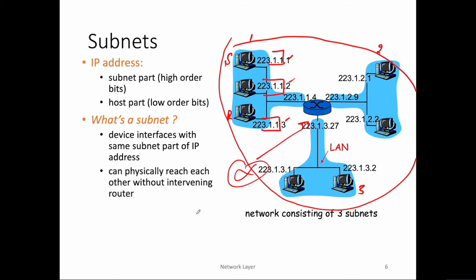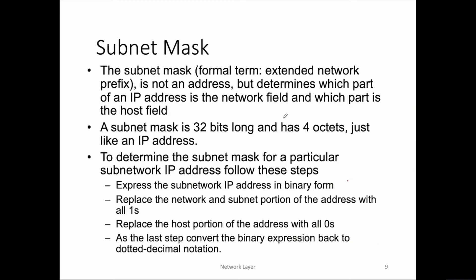Say R1 is connected to the internet and receives a packet from router R2. R1 needs to decide where to forward this packet — should it go to subnet 223.1.1.4, or 223.1.2.9, or 223.1.3.27? On which interface should it forward the packet? To make this decision, the router needs a subnet mask. So a subnet mask is a filter used in routing decisions.